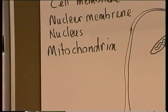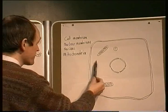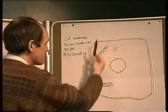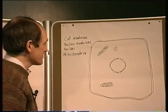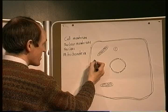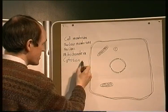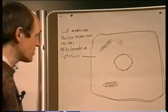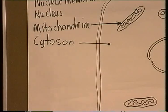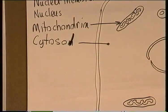Now in between the organelles, there are areas where you can't see very much, just like under light microscopy. And this is now known to be a more fluid medium in between the structures. It's given a name and it's called the cytosol — C-Y-T-O-S-O-L. The cytosol is this area in between the organelles and the mitochondria.